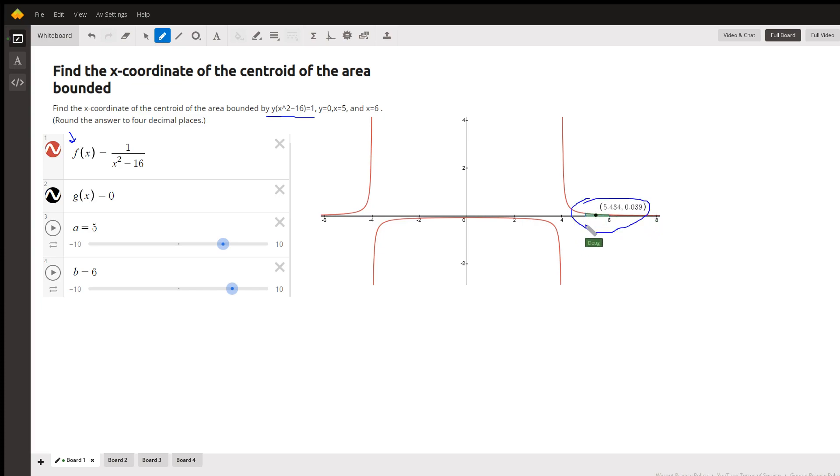This is the region right here that we want to find the centroid for, where a is 5, b is 6.